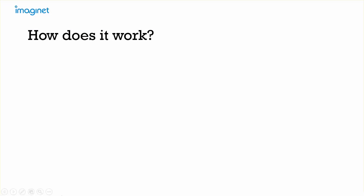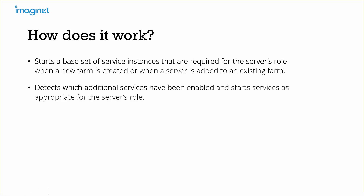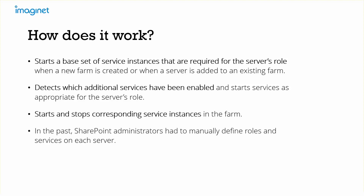So how does it work? When you define a role, SharePoint starts a base set of services. It also detects which additional services have been enabled in the farm and starts the appropriate services associated with that role. For example, if you configure a new search server in your existing 2016 farm, as soon as you define that role, SharePoint will detect other search servers in the farm and copy the configuration for you. And as you create and delete service applications, or disable and enable services, MinRole starts and stops service instances in the farm for you.